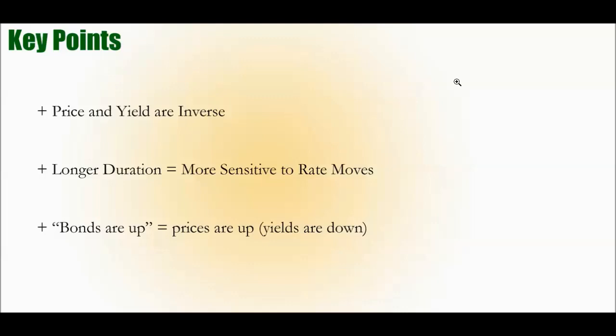Okay, key points. First up, the price and yield of a bond are inversely related. So as the price goes down, the yield is implicitly going up.